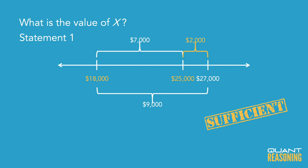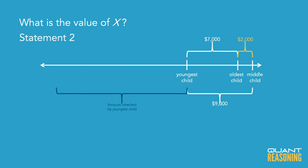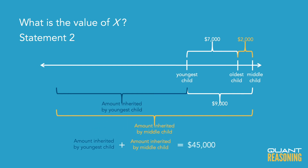Statement two gives us the total inherited by the youngest child and the middle child combined, and that's also going to depend on exactly where we are on the number line. Once we know the total amount of money that the youngest child and middle child inherited combined, there's only one possible layout on the number line that would match that.